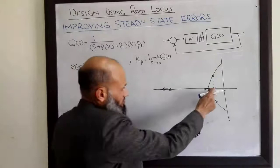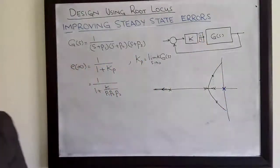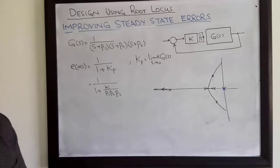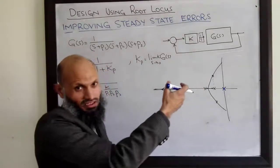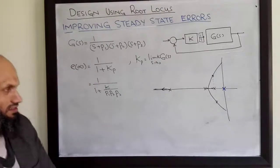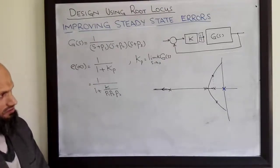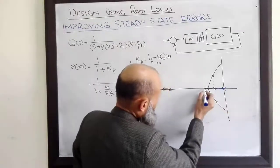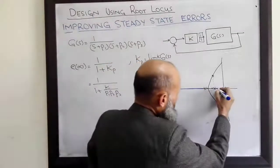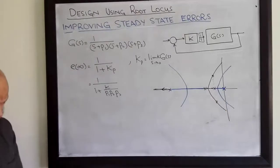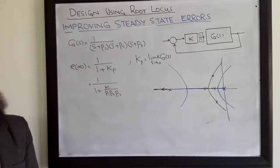In addition to the existing poles, we now have a pole from our compensator. What will be the effect of this integrator on the transient characteristics? The effect will be that the root locus will be disturbed — our new root locus will not pass through the desired closed-loop pole locations. Hence transient characteristics will also be disturbed, which we do not want since we are satisfied with them. The new root locus, sketched in blue, does not pass through the desired closed-loop poles.